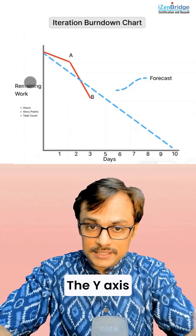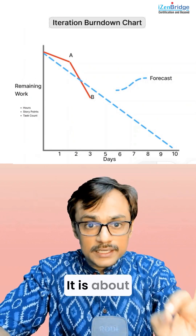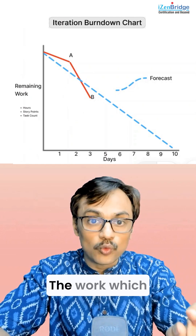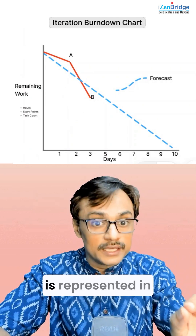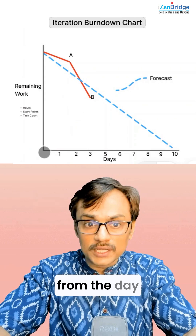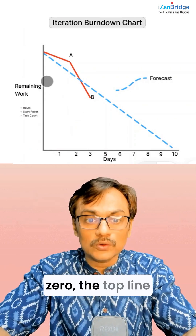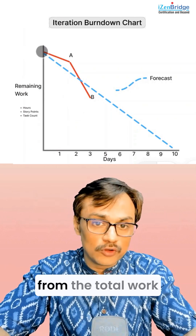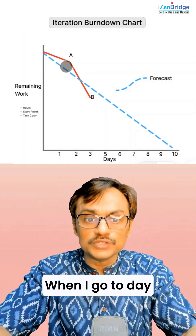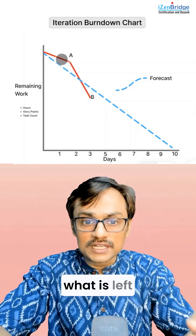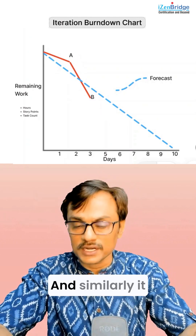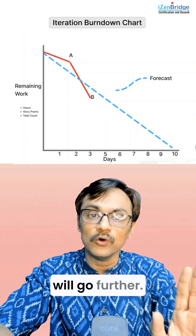The y-axis is important — it represents remaining work. Be very clear: the work which is remaining is shown on the y-axis. Starting from day zero, the top line begins at the total work in an iteration. As we move to day one, day two, day three, we look at what work is left after each day is over, and similarly it continues further.